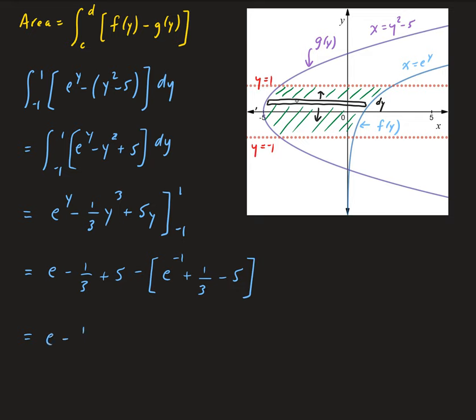So we're going to get e minus 1 third plus 5, distribute the negative, so we get minus e to the negative 1 can be written as 1 over e minus 1 third plus 5. So this, we get 10 minus 1 third, that's going to give us 28 thirds. And then we have minus, or we can, yeah, we have minus 1 over e, plus e.